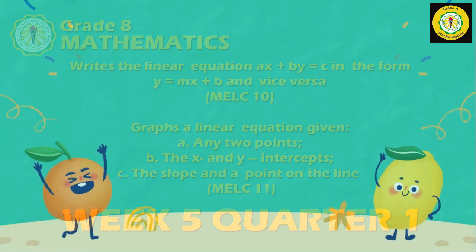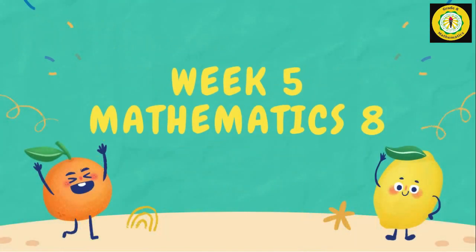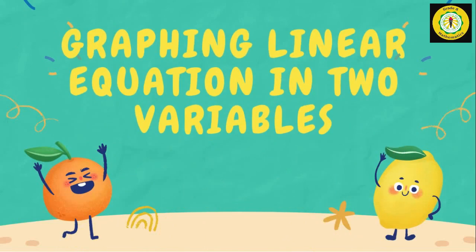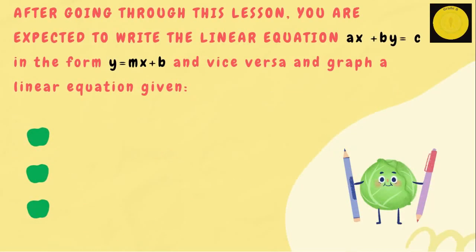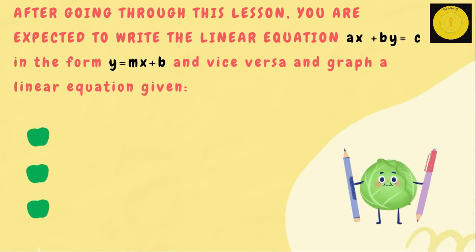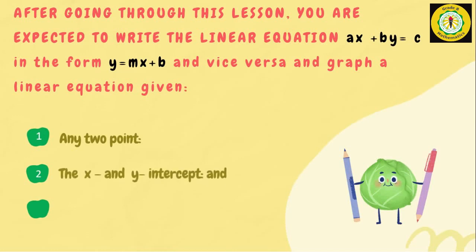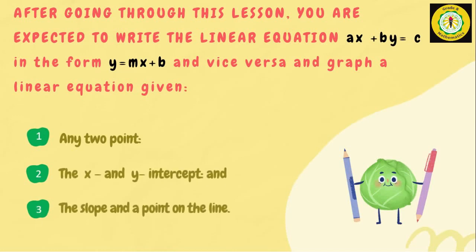Hi everyone, welcome back to our YouTube channel. For our week 5 topic, we're going to talk about graphing linear equations in two variables. After going through this lesson, you are expected to write the linear equation ax plus by equals c in the form of y equals mx plus b and vice versa, and graph a linear equation given any two points, the x and y intercept, and the slope and a point on the line.